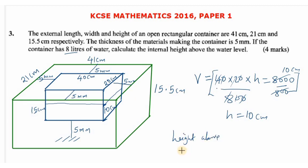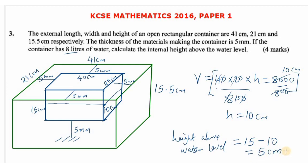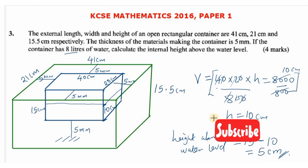The height above the water level is obtained by taking the internal height of 15 centimeters minus the water height of 10 centimeters, which gives us 5 centimeters. That is how we answer question number 3 of KCC Mathematics Paper 1, 2016. I hope to see you in the next video — thank you for watching.